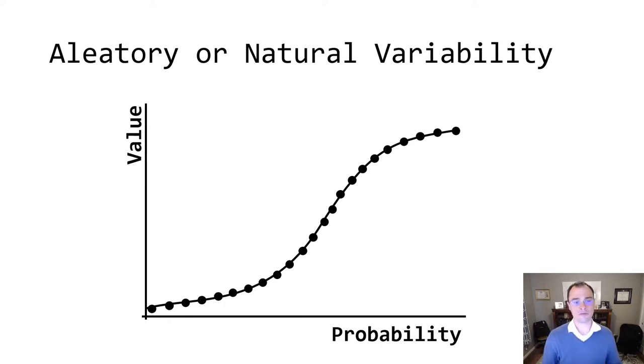Another example might be stream flow. If I were to ask you what the annual maximum stream flow is in your stream next year, you would have to say that varies naturally, and so these are the kinds of variabilities that we call aleatory uncertainties.